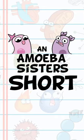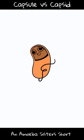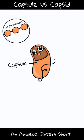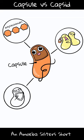Welcome to an Amoeba Sisters Short. This one is about the difference between a capsule and a capsid, since they sound so similar. Bacterial capsules are usually made of polysaccharides, a large sugar. Capsules can help the bacterium stick to surfaces, or even each other. Capsules can also help protect the bacteria from being consumed by a macrophage or help protect it from dehydration.